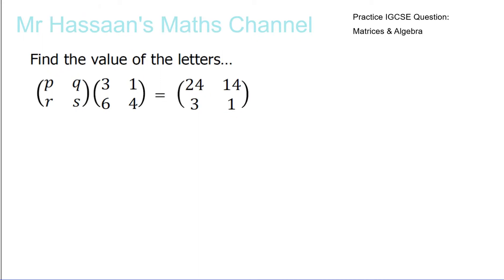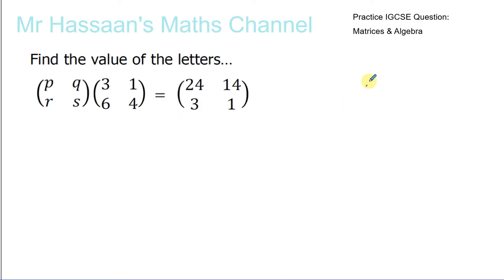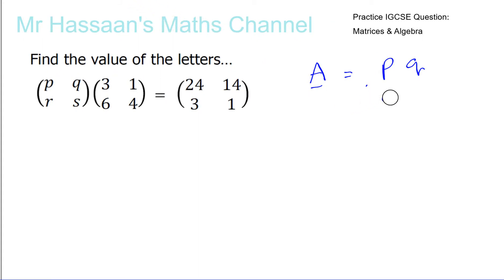There's also another way using matrix algebra, and I'll show you what that way is. To make it a bit clearer, I'm going to say let's call matrix A our unknown matrix containing P, Q, R, S.